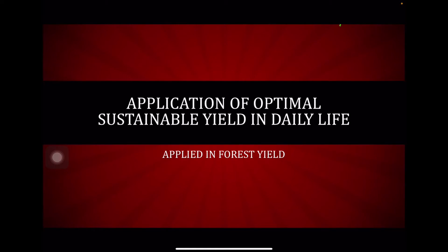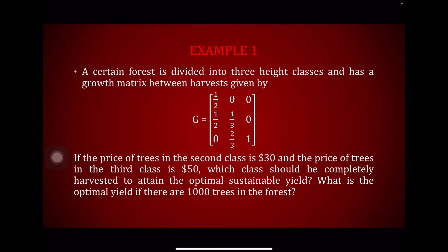We have a few examples about optimal sustainable yield in daily life. For our first example, a certain forest is divided into three high classes and has a growth matrix between harvests given by capital G: 1 over 2, 0, 0; 1 over 2, 1 over 3, 0; 0, 2 over 3, 1. If the price of trees in the second class is $30 and the price of trees in the third class is $50, which class should be completely harvested to attain the optimal sustainable yield? And what is the optimal yield if there are 1,000 trees in the forest?